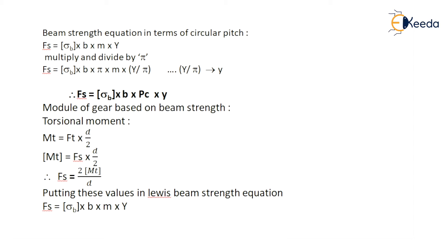The beam strength equation in terms of circular pitch can be written as FS equals sigma B into B into M into capital Y. If we multiply and divide by pi, we get FS as sigma B into B multiplied by pi into M into capital Y by pi, where capital Y by pi is written as small y. Therefore FS can be written as sigma B into B into PC (circular pitch) multiplied by small y.